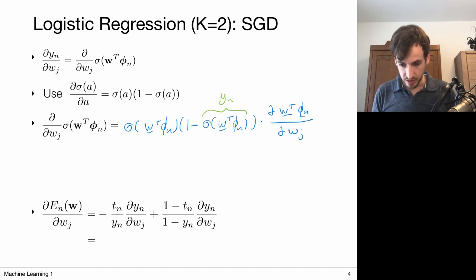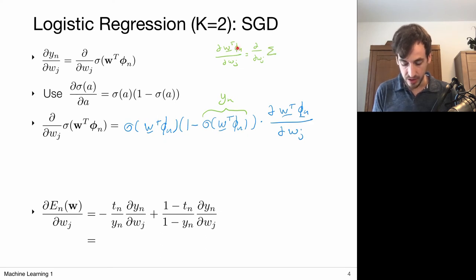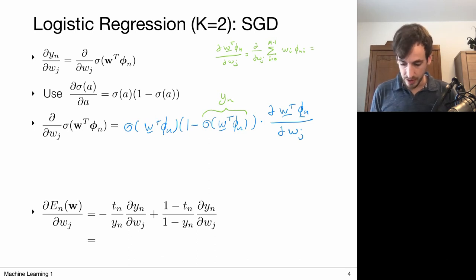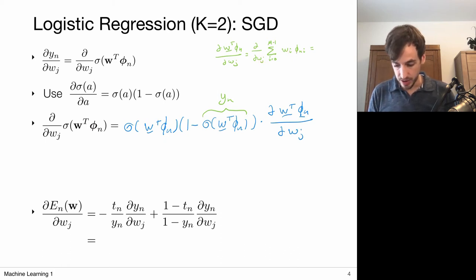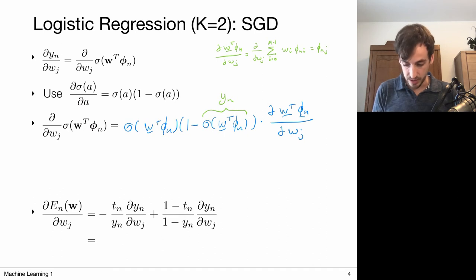Let me just write it out. The derivative of my linear model with respect to w_j is the derivative of the sum over all basis function components — the sum of w_i times the i-th component of my feature vector — with respect to w_j. Only the term where i equals j contributes, so this is just phi_{n,j}. For i not equal to j, w_j is just a constant, and its derivative is zero. So the derivative is phi_{n,j}.